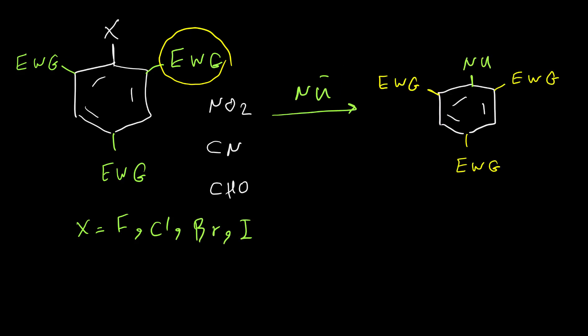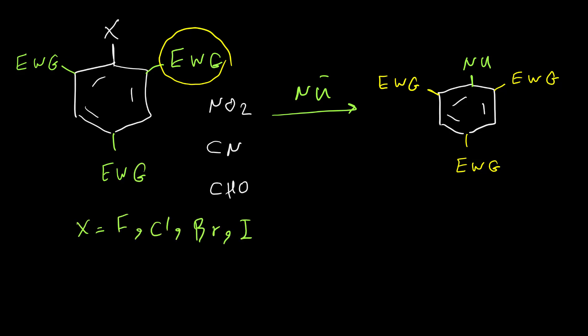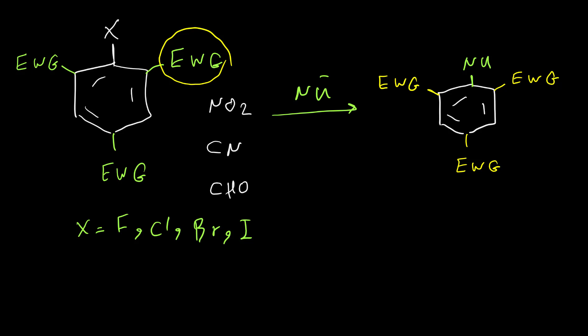The mechanism for this reaction is not SN1 and not SN2. It's not SN1 because SN1 requires a carbocation, and formation of a carbocation on a benzene ring — a phenyl carbocation — is very unlikely and very unstable. It's not SN2 either, because a backside approach of the leaving group is impossible; the nucleophile cannot attack from the backside. The mechanism is two steps: addition of the nucleophile and elimination of the leaving group.